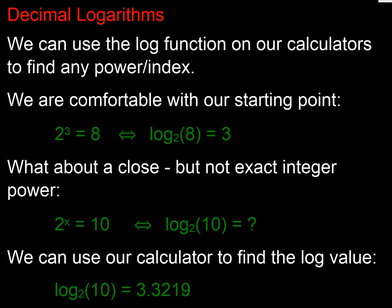We can also use logarithms to look at decimal powers. Back to our example: 2 to the power 3 equals 8, so log base 2 of 8 is 3. Now let's find x where 2 to the x equals 10. We know 2³=8 and 2⁴=16, so x isn't an integer. Using our log relationship, we can reverse it: x is going to be log base 2 of 10 — what power do we have to apply to 2 to get 10? We can get that out of our calculator.